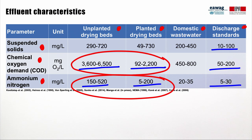Thirdly, even after solid-liquid separation, these effluents can have much higher concentrations than the influent of a domestic wastewater treatment plant. For example, whereas the suspended solids concentrations in the leachate from drying beds are somehow similar to domestic wastewater, COD and ammonium concentrations can be one order of magnitude higher.